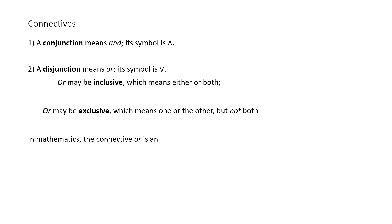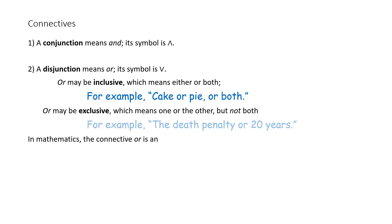The 'or' may be inclusive, which means 'either or both' — for example, cake or pie or both. Or may also be exclusive, which means one or the other but not both — for example, the death penalty or 20 years; one excludes the other. In mathematics, the connective 'or' is an inclusive or.